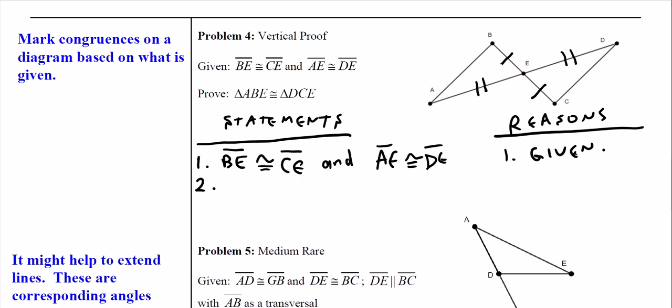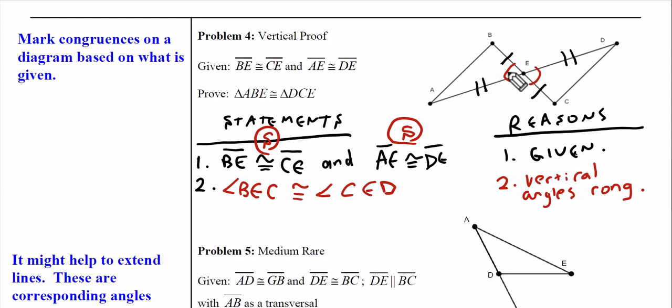We're going to start with our given. We note that this is a pair of sides, and this is a pair of sides. So we need the included angle. Well, nothing was given to us. However, notice that these are vertical angles. And we know that vertical angles are congruent. And that happens to be the included angle for this triangle and for this triangle. And so we have our side. Now we have our angle pair. And then we have our side. So we can say that triangle ABE is congruent to triangle DCE because of the side angle side theorem.